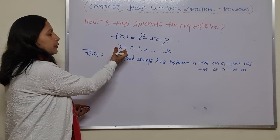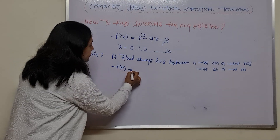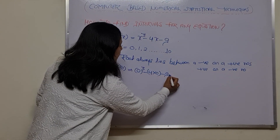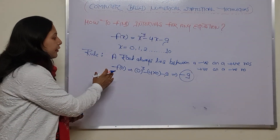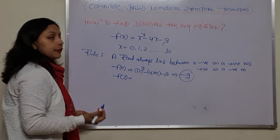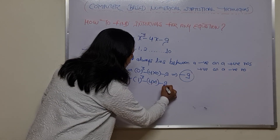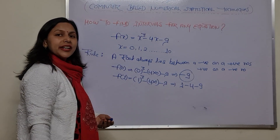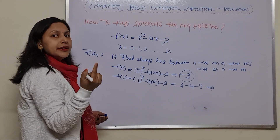Our equation is f(x) = x³ - 4x - 9. First, put x = 0: f(0) = 0³ - 4(0) - 9 = -9. Then put x = 1: f(1) = 1³ - 4(1) - 9 = 1 - 4 - 9 = -12.